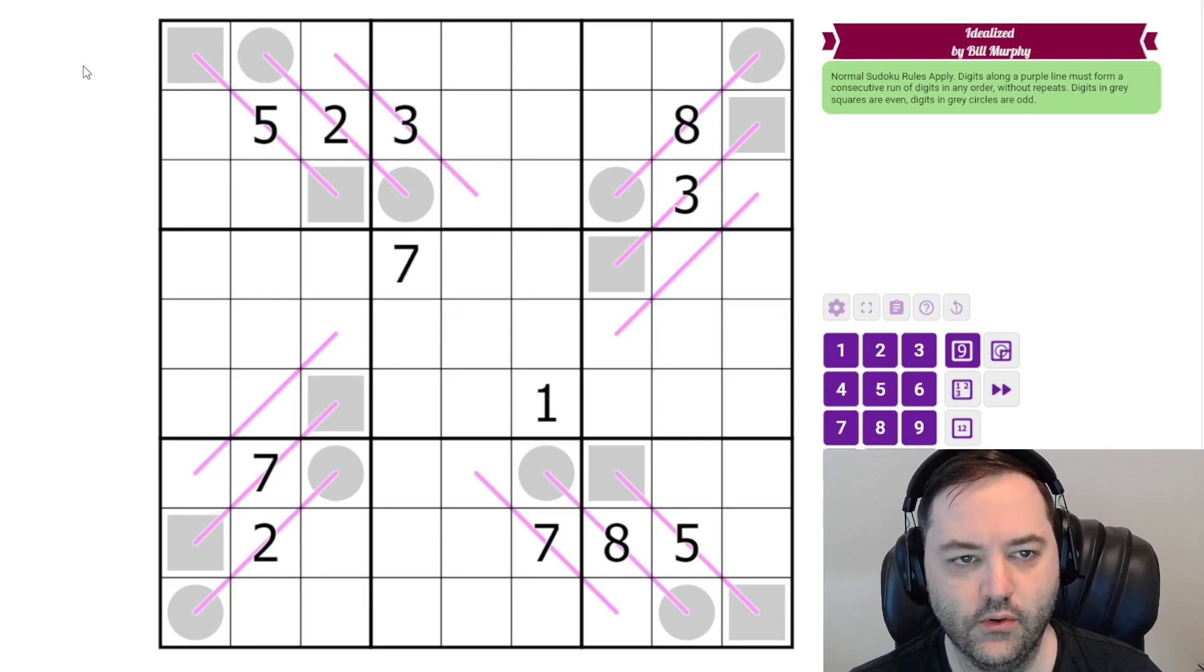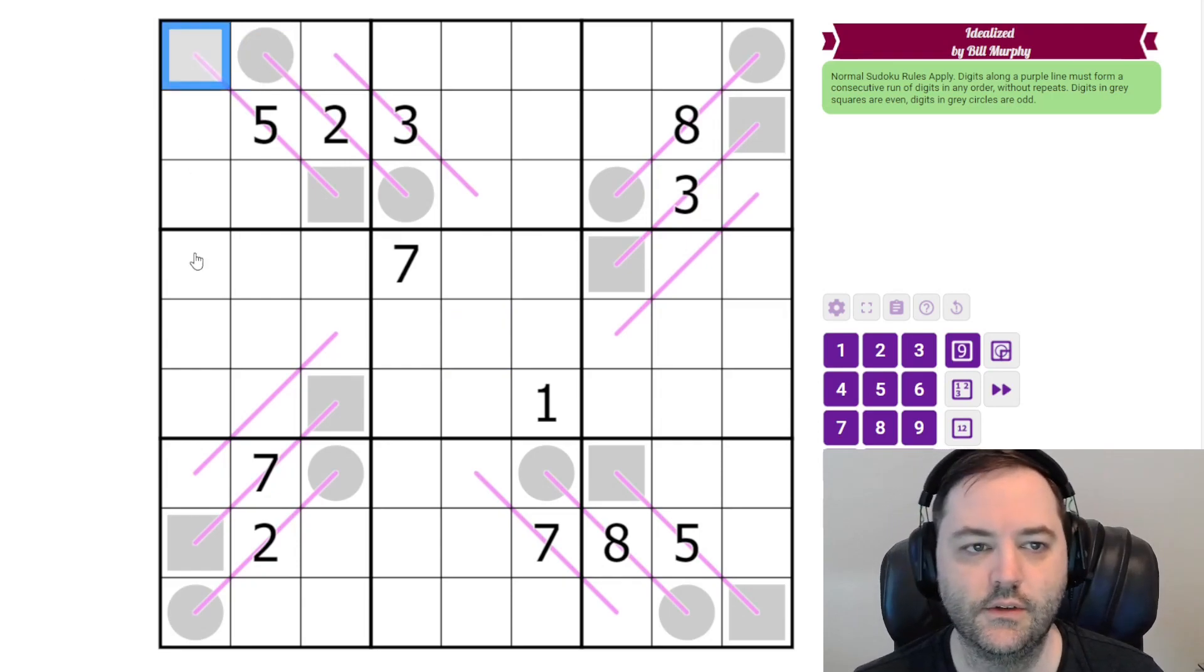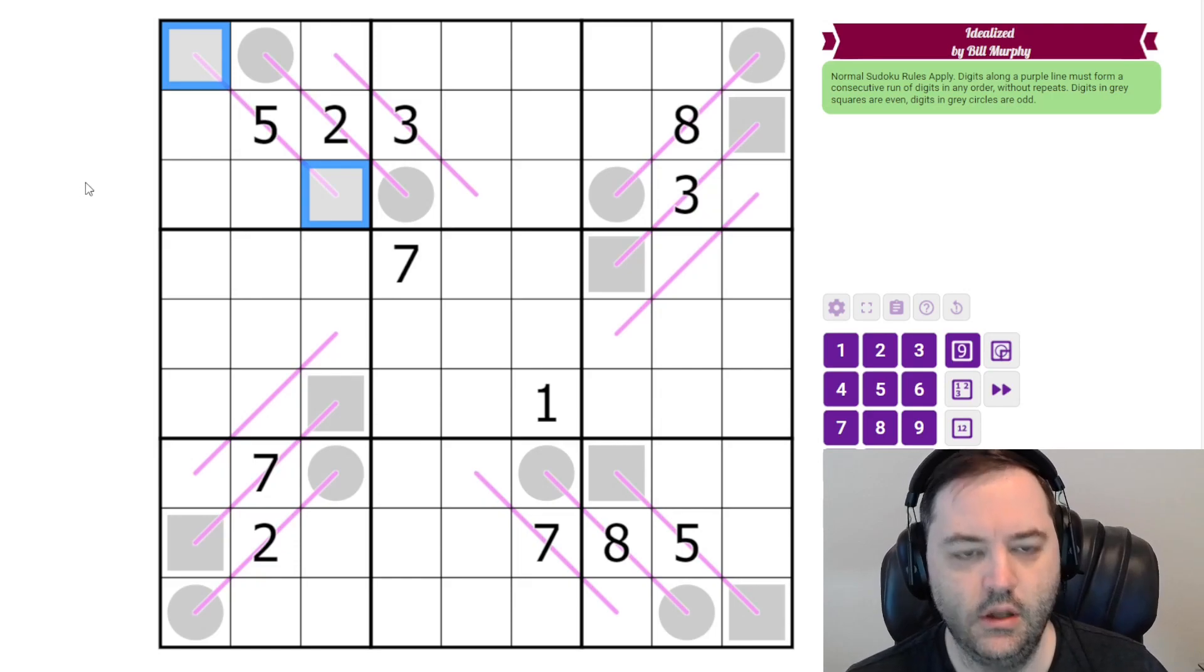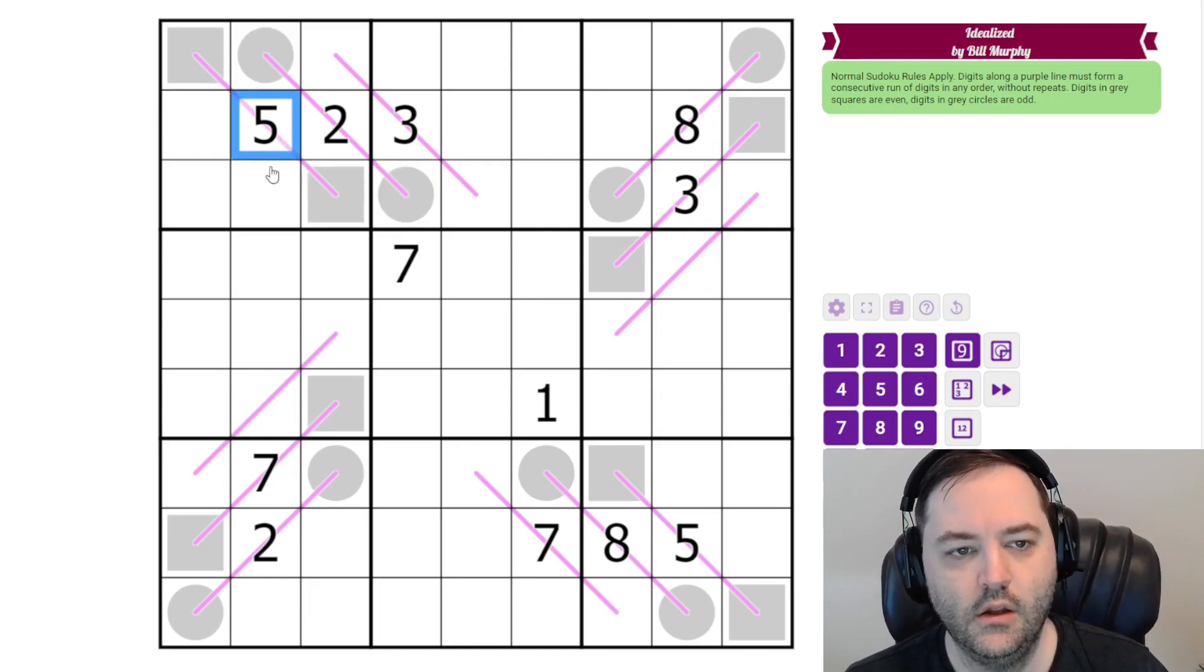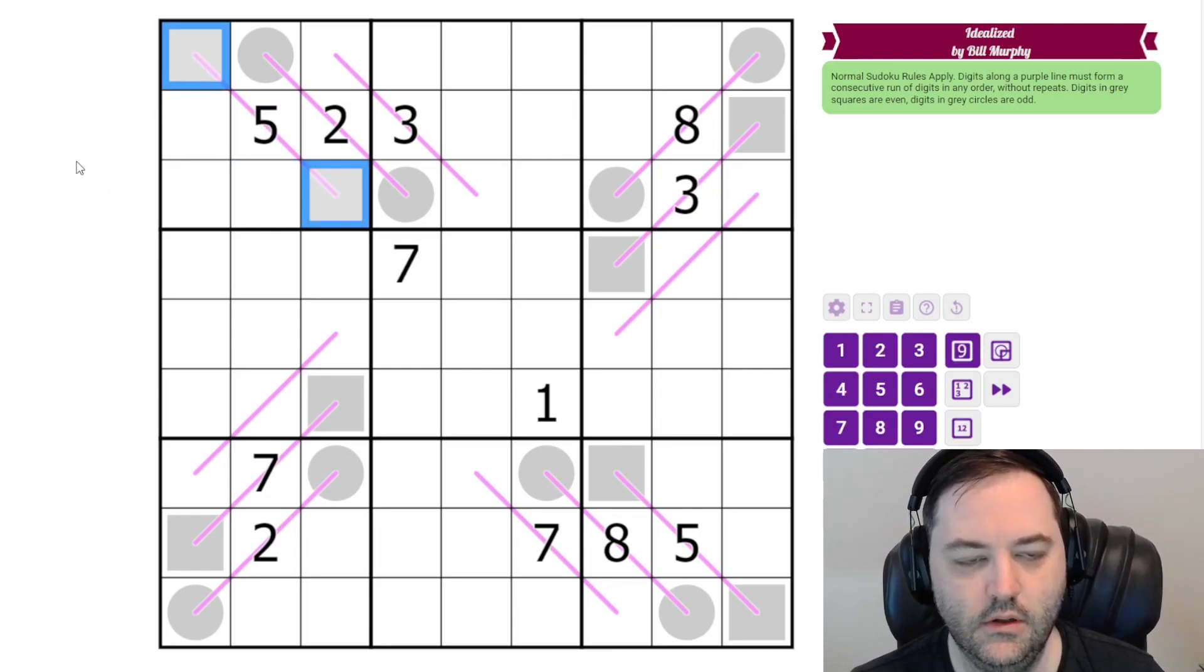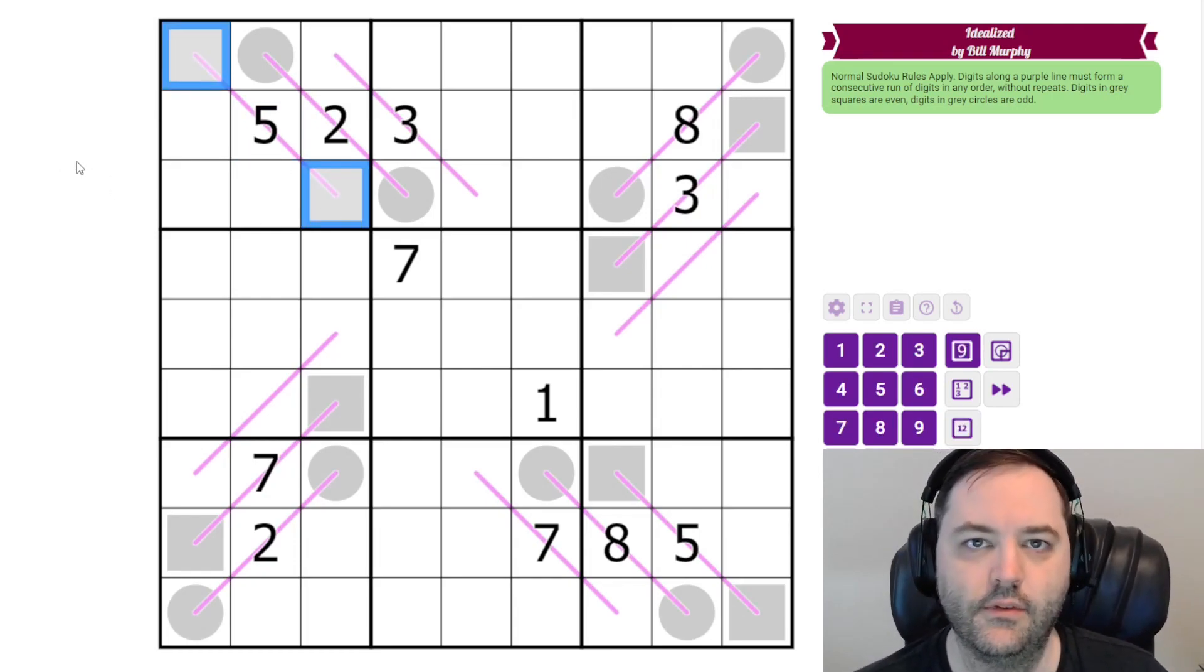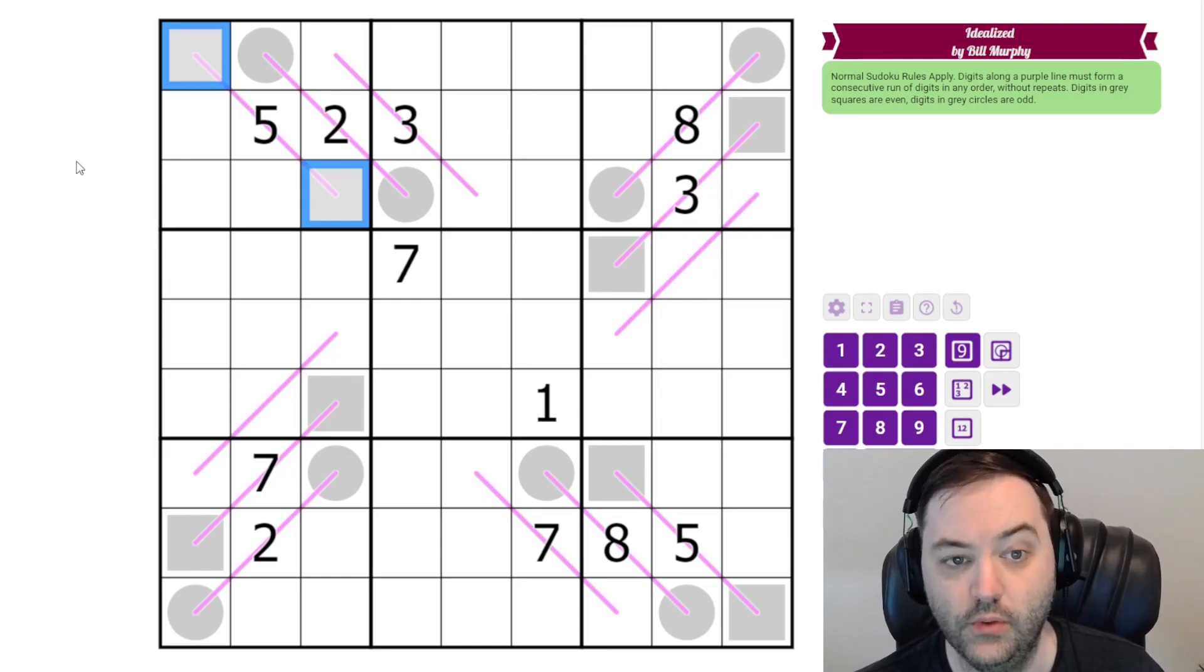But they don't have to be in any particular order along the line. And then odd and even, the circles must contain odd digits, the squares must contain even. And we could color in this puzzle and we might as we go, haven't decided yet.